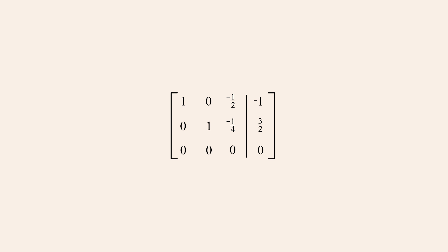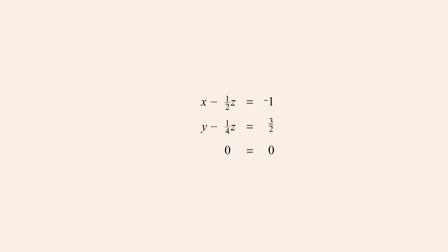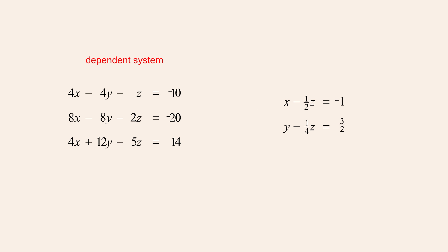Since both leading entries in the matrix are now the only non-zero entry in their column, this matrix is in reduced row echelon form. Converting the matrix back into equations, eliminating the terms with coefficients of zero, eliminating the coefficients of one, and the equation zero equals zero, gives us an equivalent system containing two independent equations. So Gauss-Jordan elimination has transformed a dependent system of three linear equations into an equivalent independent system of two linear equations. In addition, these equations are simpler than the original equations since each equation contains fewer variables.